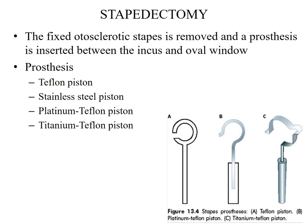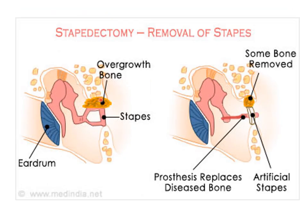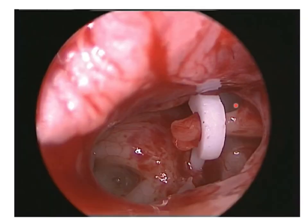The fixed otosclerotic stapes is removed and the prosthesis is inserted between the incus and the oval window. Different types of prosthesis include the Teflon piston, stainless steel piston, platinum-Teflon piston, and titanium-Teflon piston. In stapedotomy, a drill hole is made, the stapes superstructure is removed, and the prosthesis is inserted between the incus and oval window. In stapedectomy, the overgrown bone with stapes superstructure is removed and the prosthesis is fixed in place. The Teflon piston is attached to the long process of the incus and inserted through the drilled hole in the footplate above the oval window.